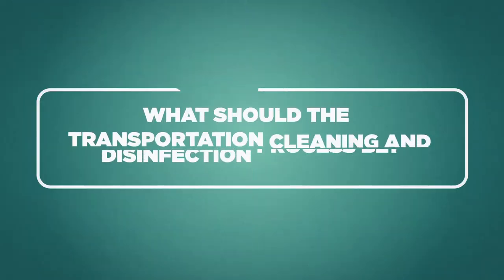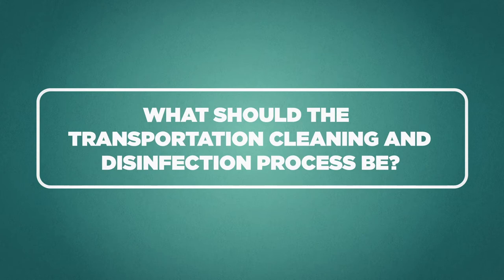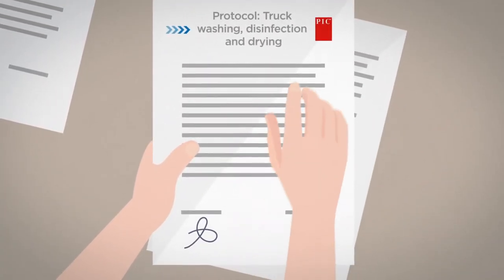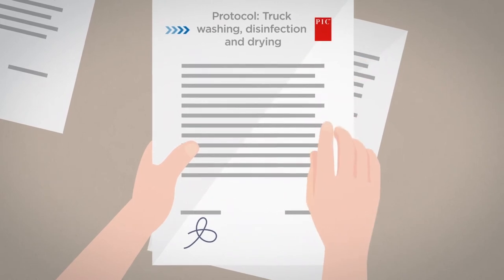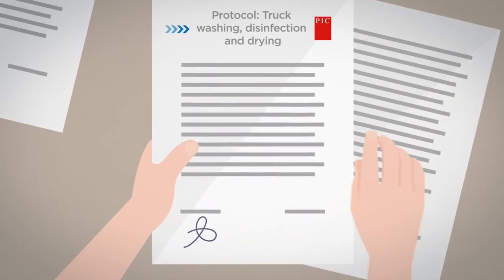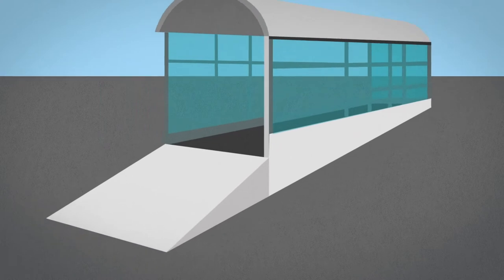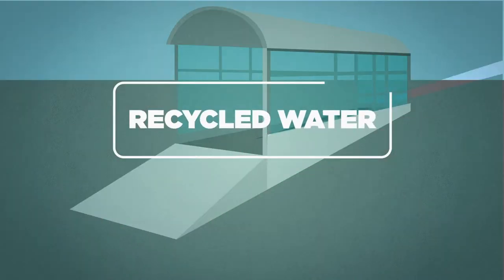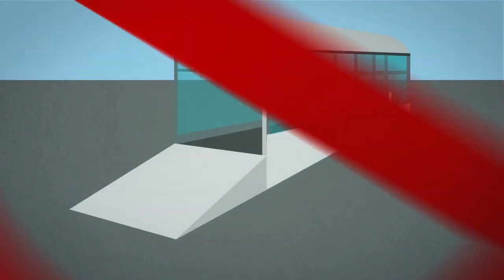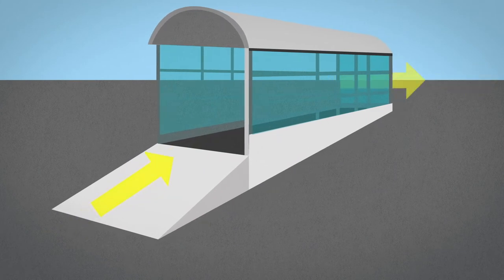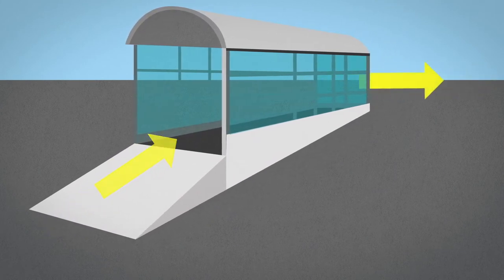How should the transport clean and disinfection process be? Truck washing, disinfection, and drying must occur at PICHA-approved locations in accordance with approved protocols. Truck wash facilities utilizing recycled water are prohibited from washing breeding stock trailers. Drivers should enter the wash bay from the dirty side of the building. The bay must be clean.